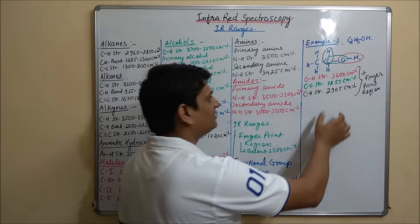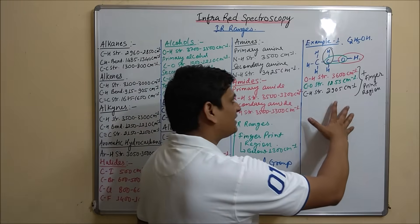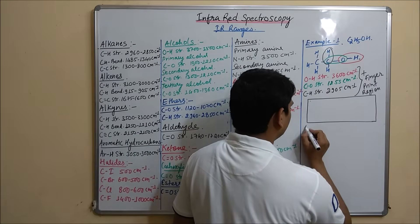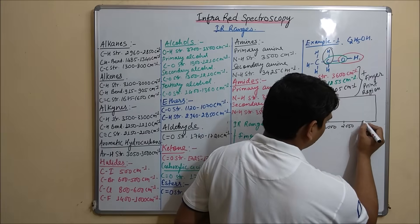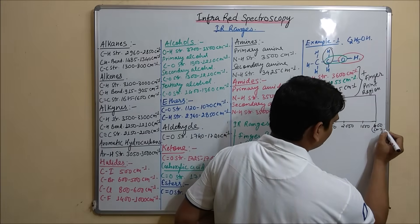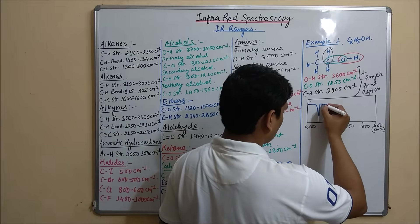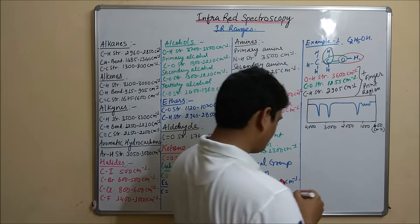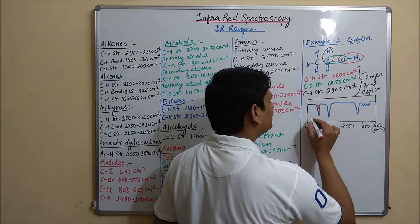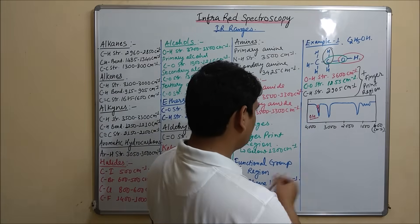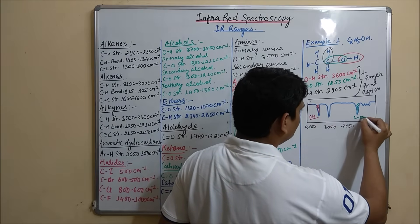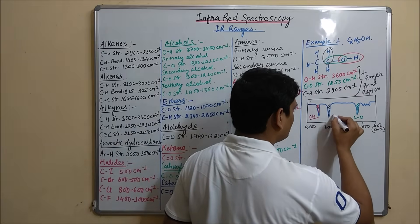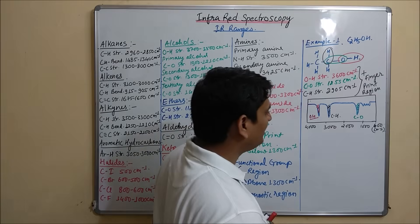The fingerprint region will occur due to the presence of the CC skeleton. So the spectrum for ethanol will show a peak for the OH group, a peak for the CO group, a peak for the CH group, and the fingerprint region spectra.